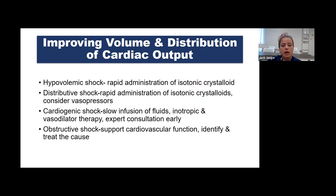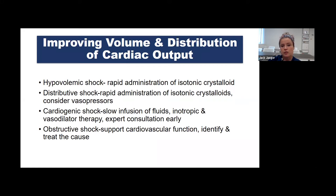For hypovolemic shock, give rapid administration of isotonic crystalloids—normal saline or lactated ringers. For distributive or septic shock, also give rapid isotonic crystalloids, but you'll likely need to add vasopressors. For cardiogenic shock, which is rare in children but can occur after prolonged SVT, use slow infusion of fluids, inotropic and vasodilator therapy, and consult experts early—call for transport quickly.